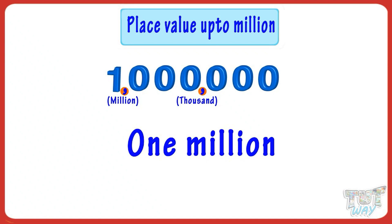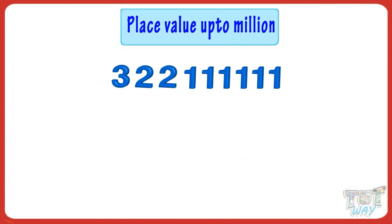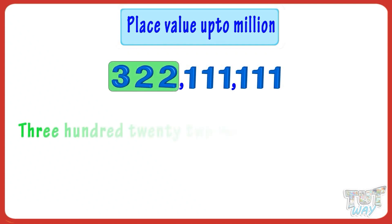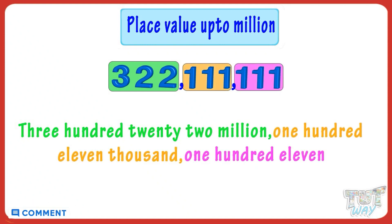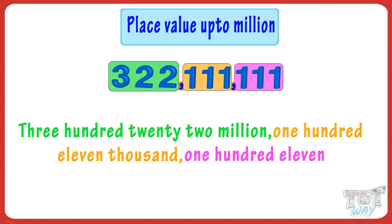Now let's take another example. Here we have a number. Starting from the right, put commas after every three digits. Here we have two commas. We will read it like three hundred twenty two million, one hundred eleven thousand, and one hundred eleven. So the number is three hundred twenty two million one hundred eleven thousand and one hundred eleven.